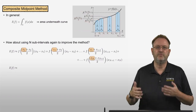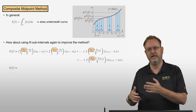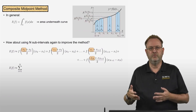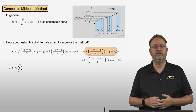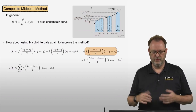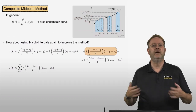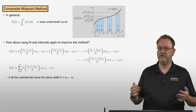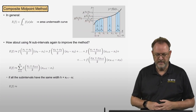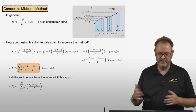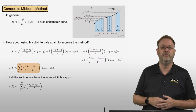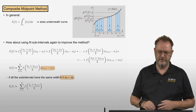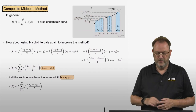Writing this in compact form, each term contains x1 through xn, so this is a sum from i=1 to n of f((xi + x_{i+1})/2) times (x_{i+1} - xi). If all subintervals have the same width h, we can factor h out in front of the sum. That gives us the composite midpoint method formula: h times the sum of the function values evaluated at the midpoints of each subinterval.